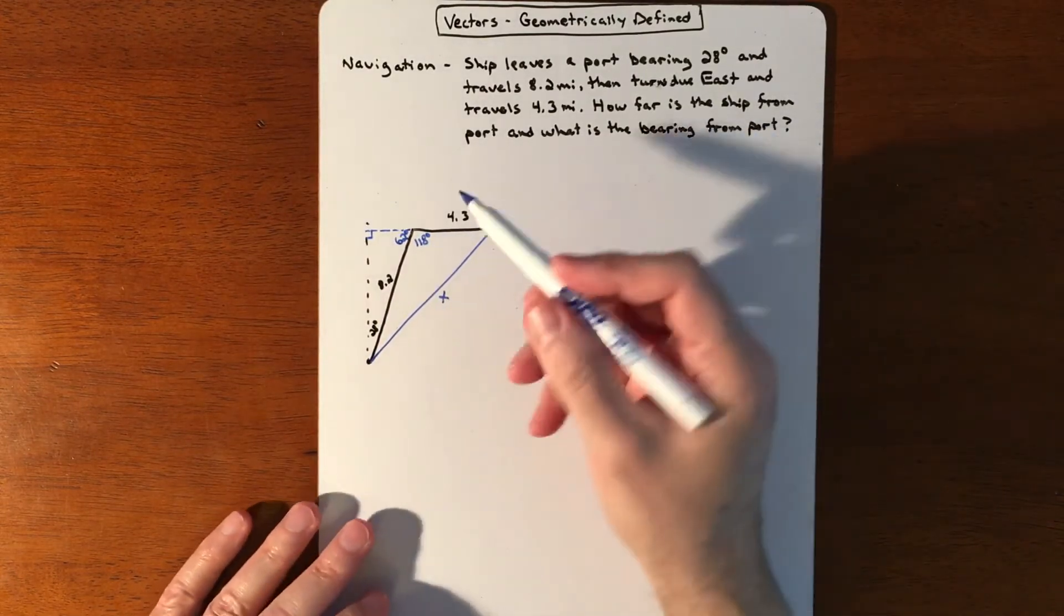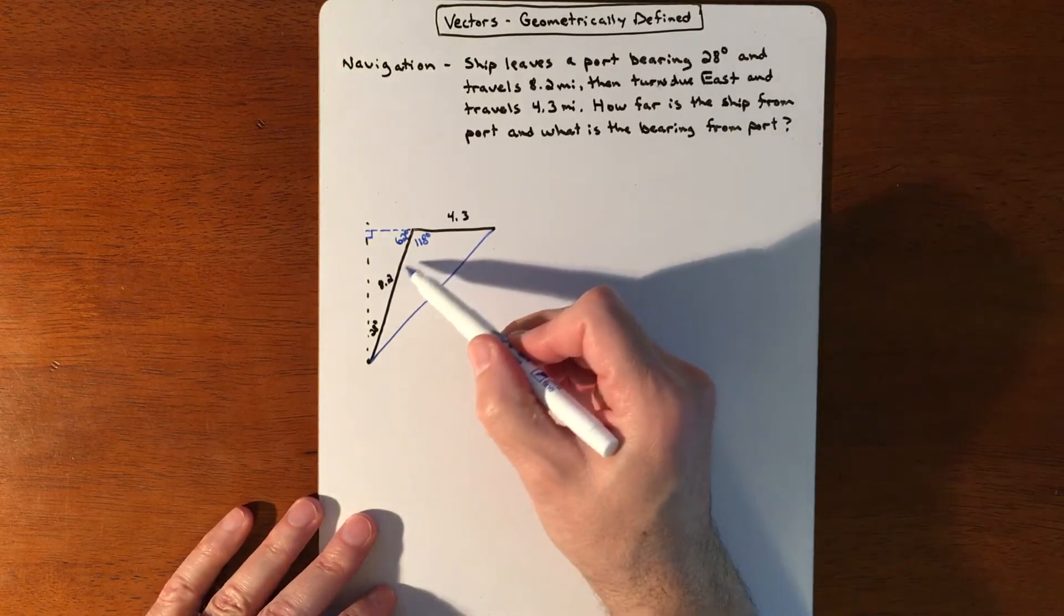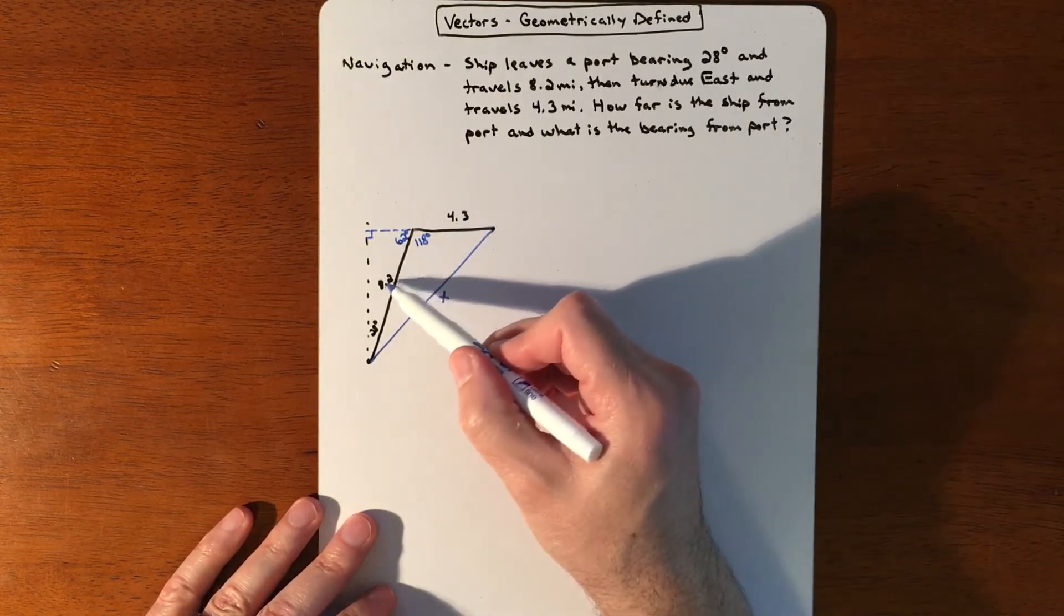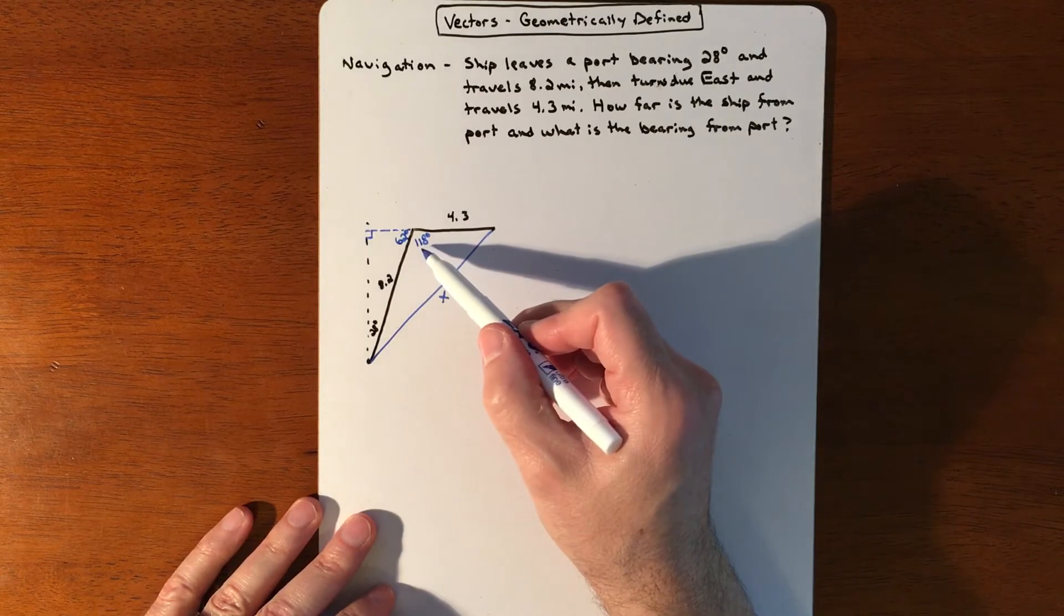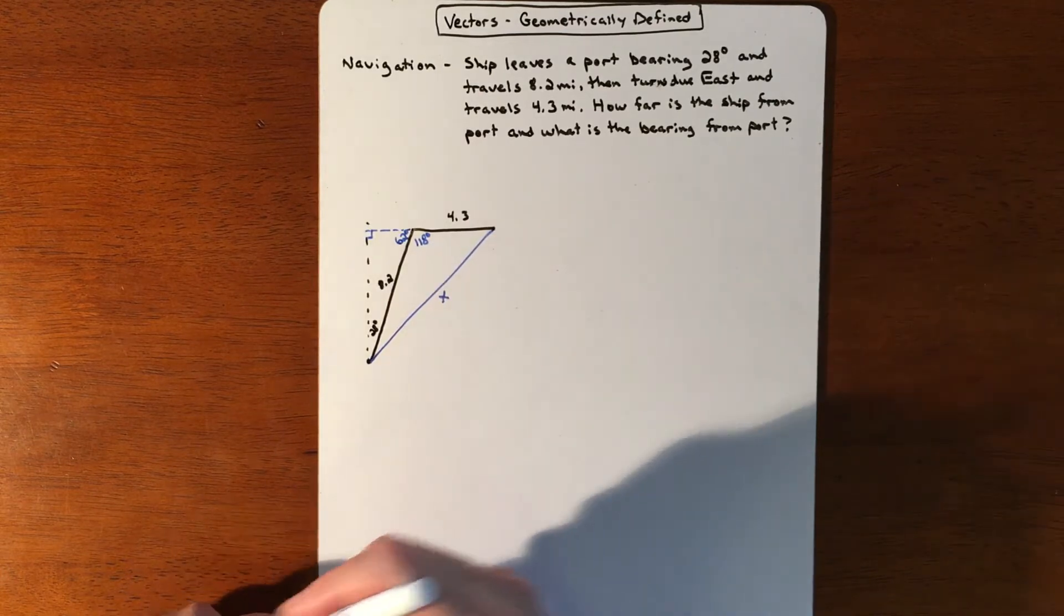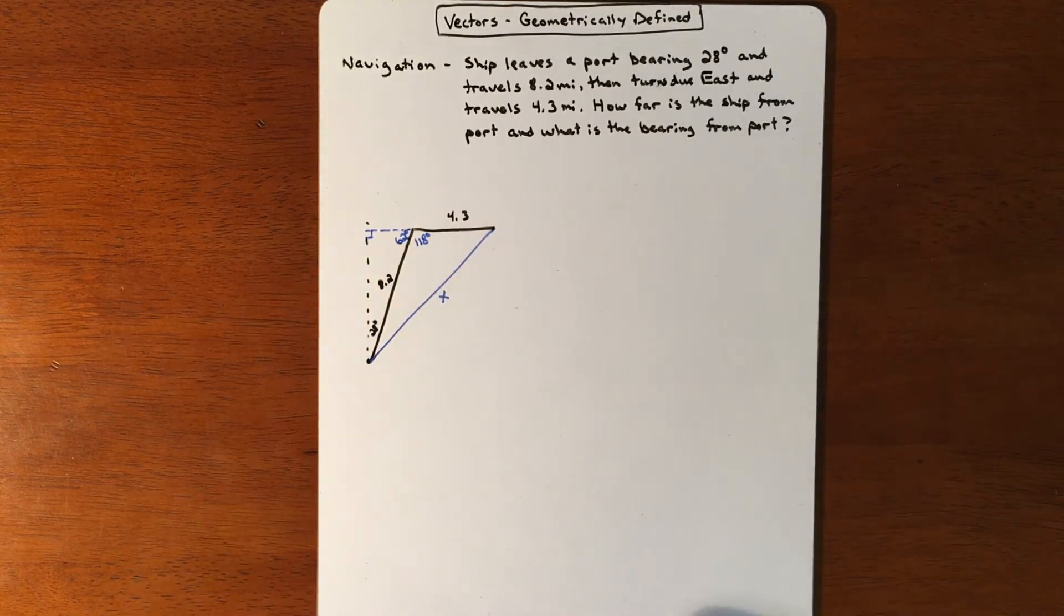And we have everything we need actually to figure out what this piece is because you have yourself a law of cosines right here. If you have two sides and the angle in between, that is very much a law of cosines problem.